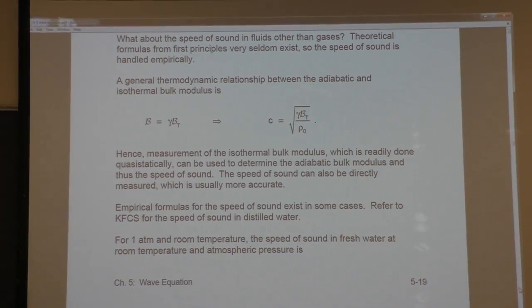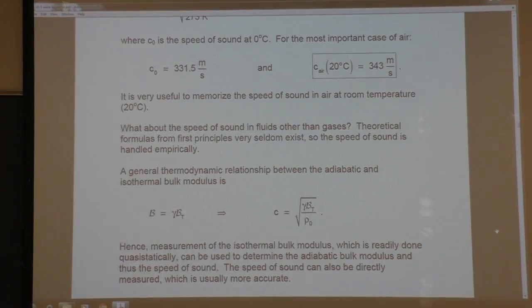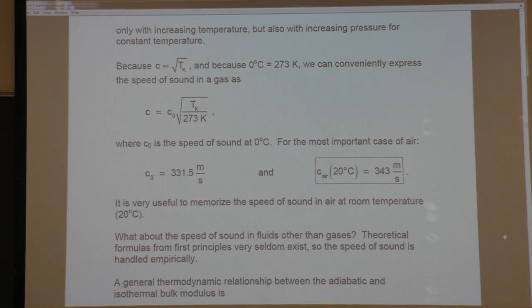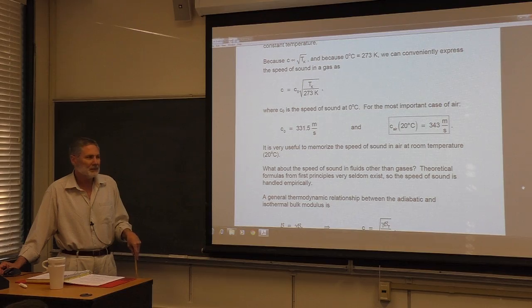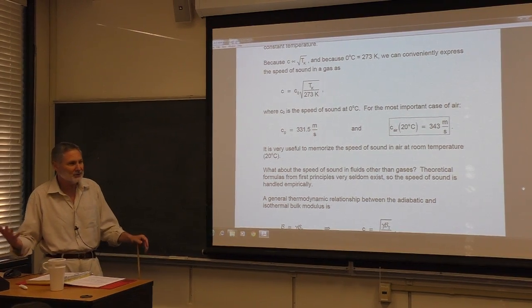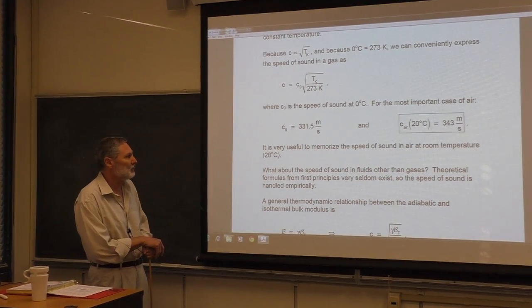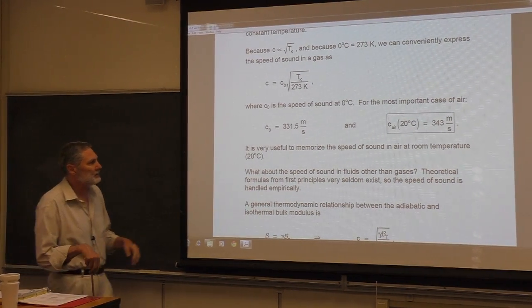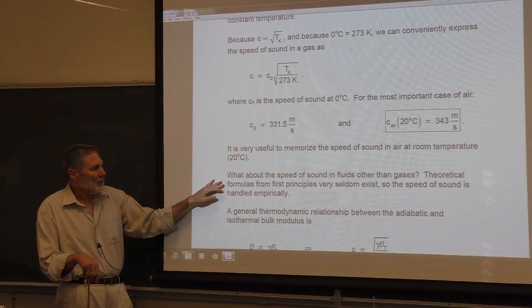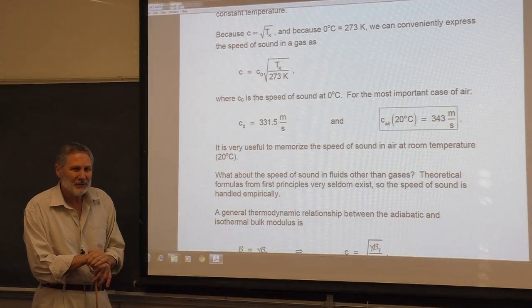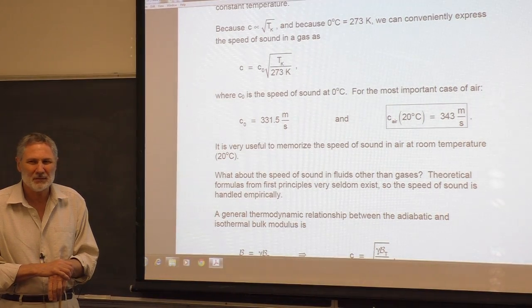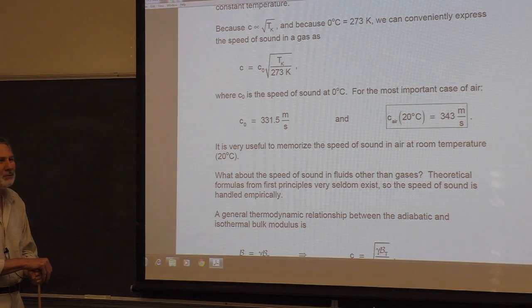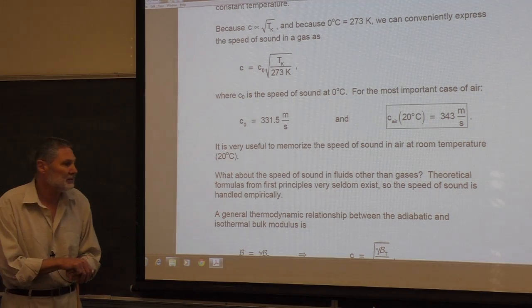For an ideal gas, we know how pressure and density behave adiabatically. We can determine an explicit formula for the speed of sound that depends upon the temperature. If you keep the temperature the same, even if you change the pressure and the density, the speed of sound won't change. Now, what about fluids that aren't ideal gases? We're almost always interested in liquids, particularly water. Almost always, you don't have an equation of state — though for water there is something called the Tait equation of state, an empirical relationship, but it doesn't get much use.